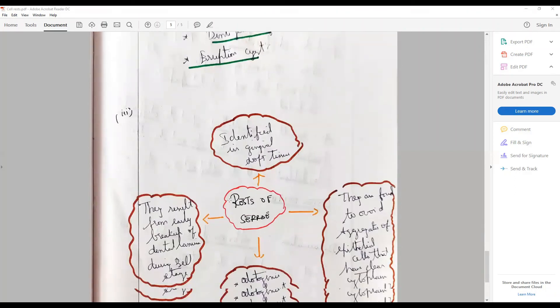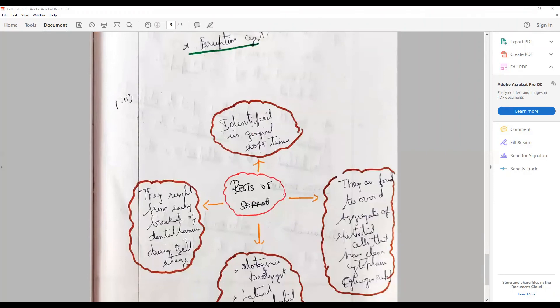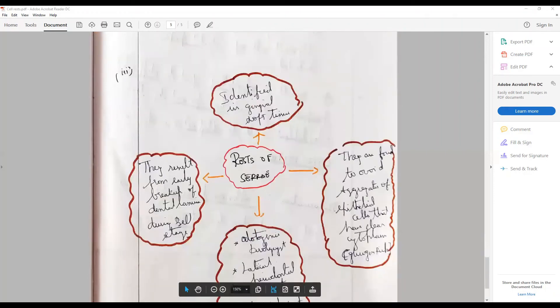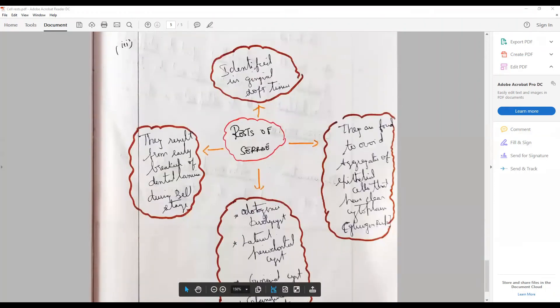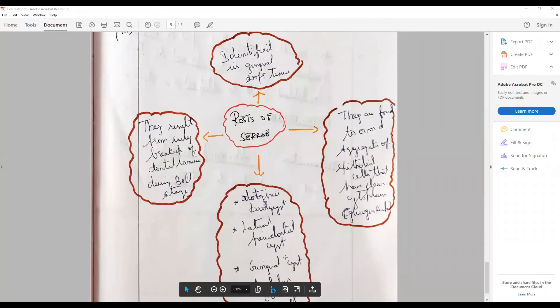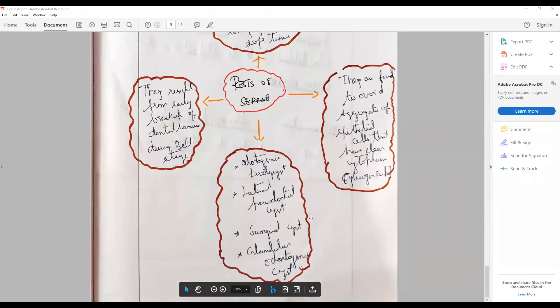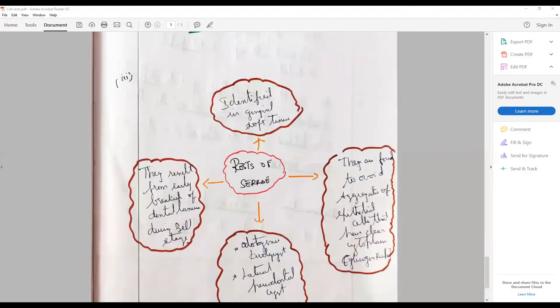Gives rise to odontogenic keratocyst, suspected to be associated with lateral periodontal cyst, gingival cyst, glandular odontogenic cyst. They are found to be round to ovoid aggregates of epithelial cells that have a clear cytoplasm because they have glycogen. This kind of approach will help you to get more marks.